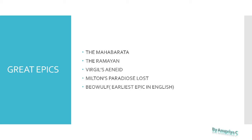Some of the great epics ever written are the Mahabharata, the Ramayana, Virgil's Aeneid, Milton's Paradise Lost, and Beowulf — one of the earliest epics in English. As far as we know, we do not know who wrote it down, but there exists a book named Beowulf which is one of the earliest, and it actually belongs to the Anglo-Saxon, or the originating period of the English language.